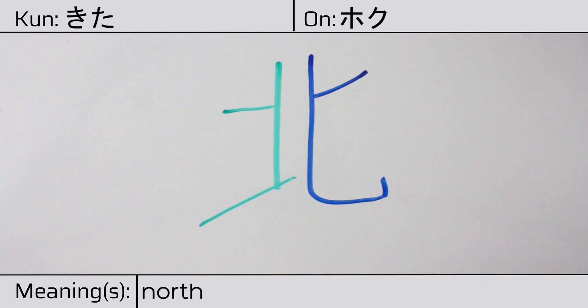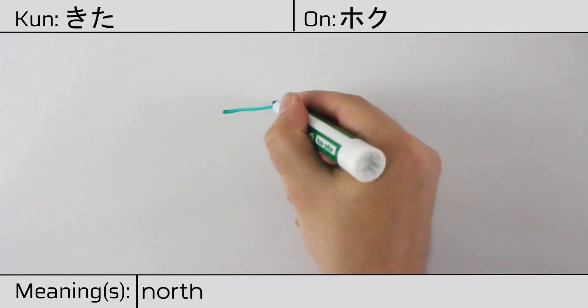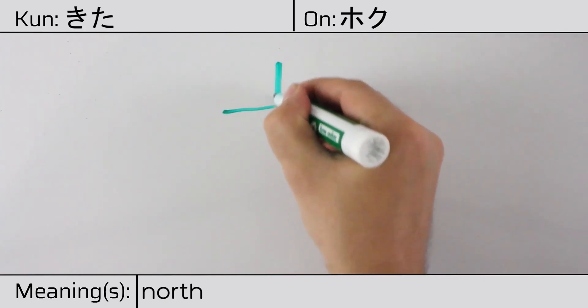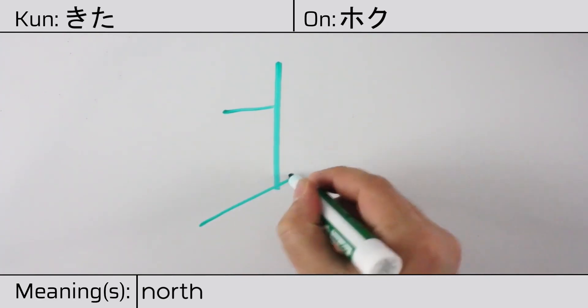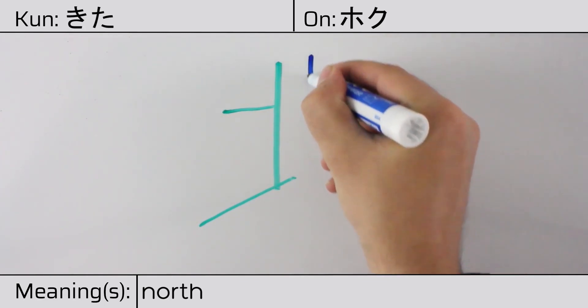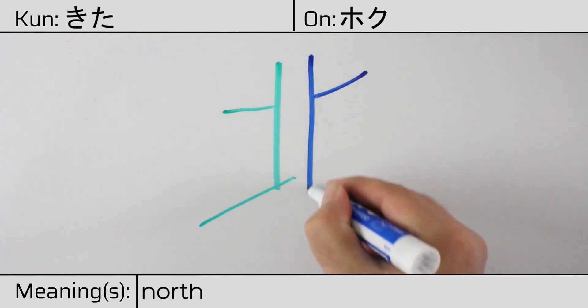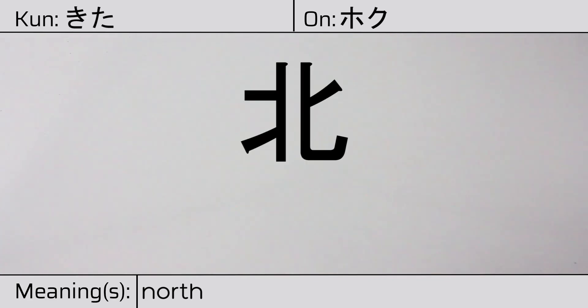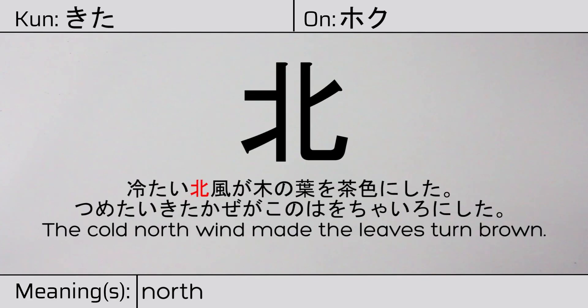You can remember this kanji by the following hint: two people standing back to back, turning one's back to the cold north. Our example sentence: The cold north wind made the leaves turn brown.